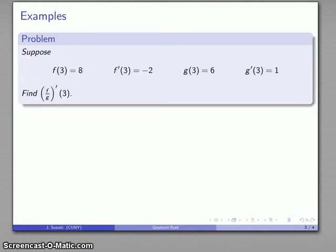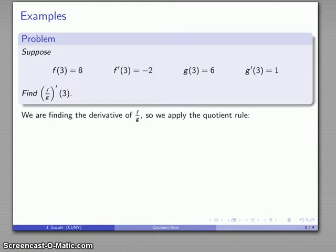As with the product rule, given some values of a function and some values of the derivative, we can find the derivative of the quotient of two functions. Here I have a bunch of values of functions and derivatives, and I want to find the derivative of the quotient. It is a quotient, so we apply the quotient rule.